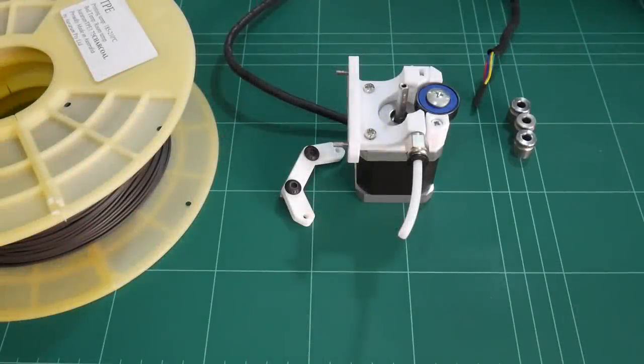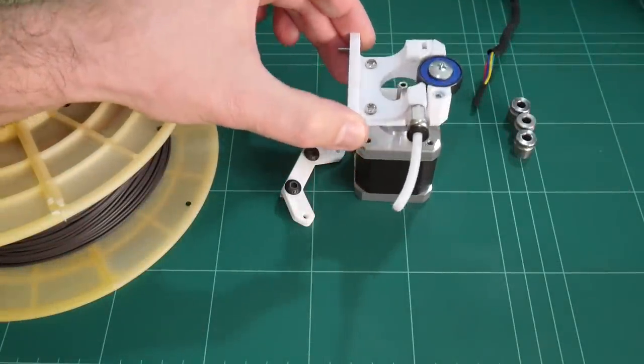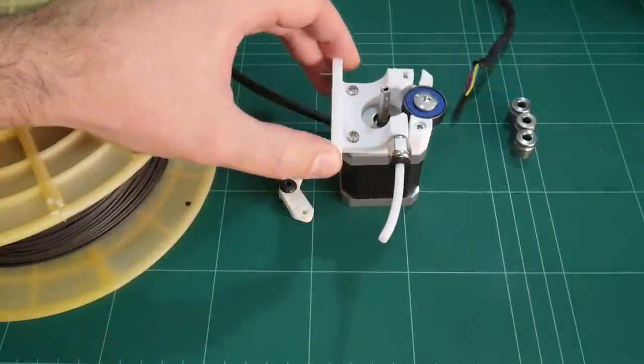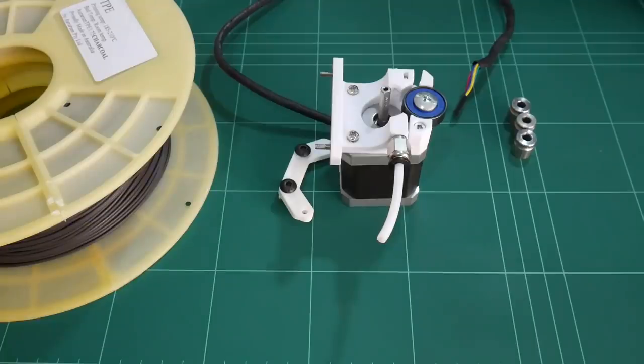I've been using a Bowden-style extruder on my 3D printer. This is the one I downloaded from Thingiverse, and while it has worked quite well for me for printing rigid filaments like PLA,